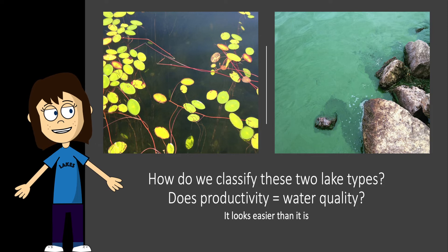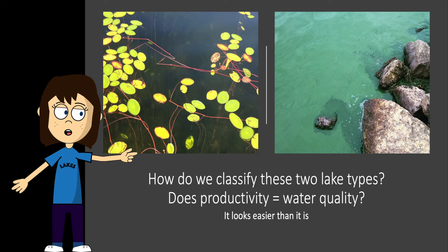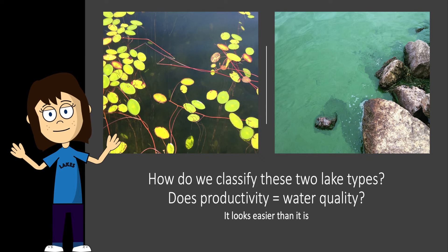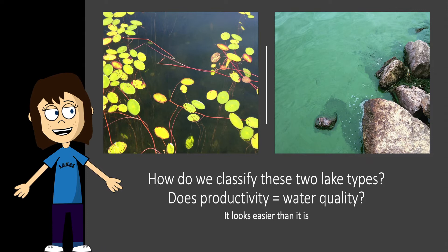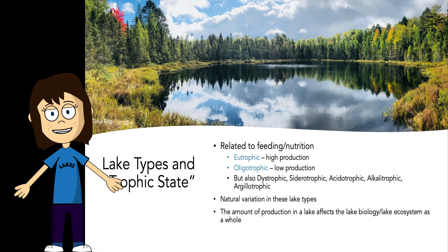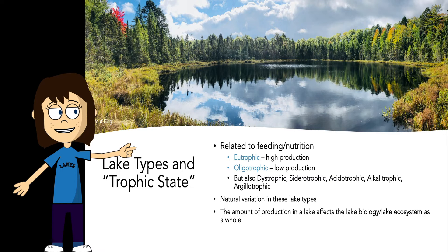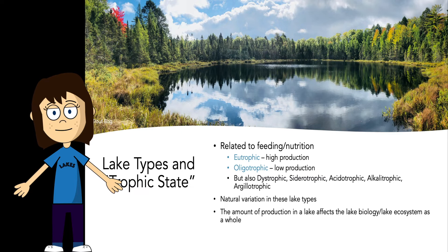Take a look at these two pictures showing two very different lakes. The one on the left is very clear — you can see macrophytes growing from the bottom. The picture on the right shows a lake with a very dense algal bloom. How do we classify these two types of lakes? The most common way is by their trophic state, which is related to feeding and nutrition. Lakes can be classified as eutrophic, meaning they have high production, versus oligotrophic, which means very low production.